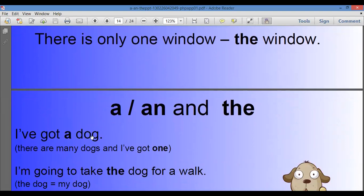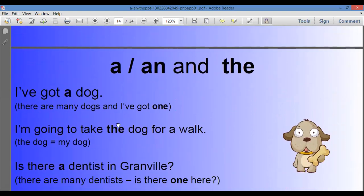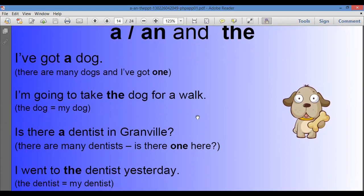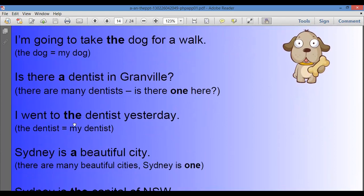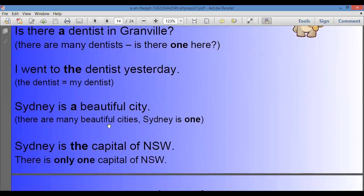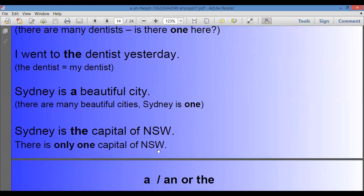I have a dog. There are many dogs. And I have got one. I am going to take the dog for a walk. The dog equals my dog. I went to the dentist yesterday. Sydney is a beautiful city. There are many beautiful cities. Sydney is one.